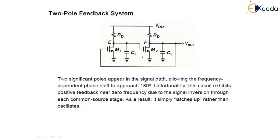Unfortunately, this particular circuit exhibits positive feedback near zero frequency due to the signal inversion at each common source stage. As a result, it simply latches up rather than oscillates. It tries to grow but it simply latches up rather than producing oscillation. So what we do to have our common source stage oscillate is to introduce additional signal inversion.